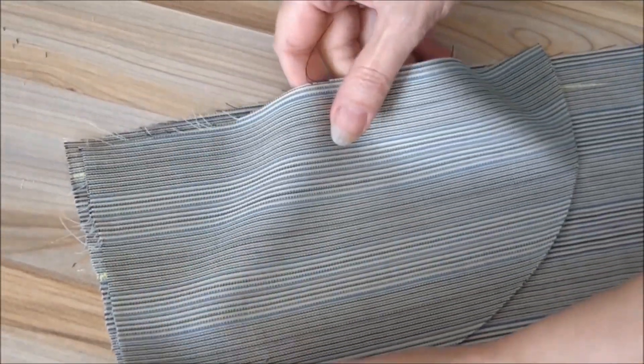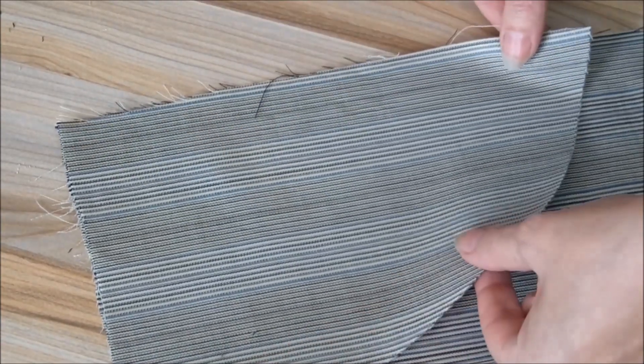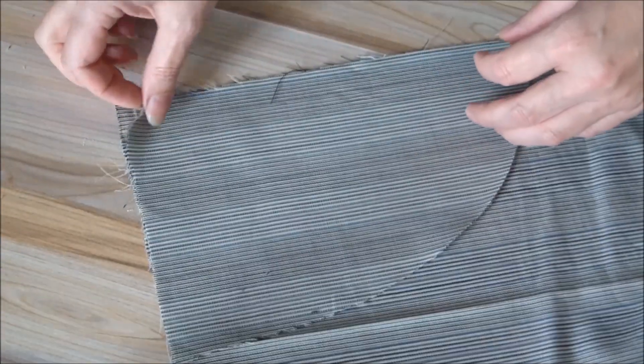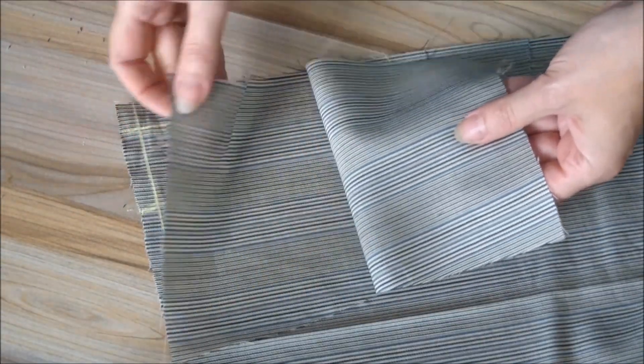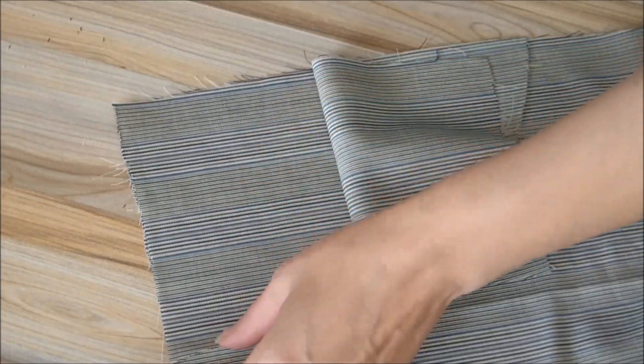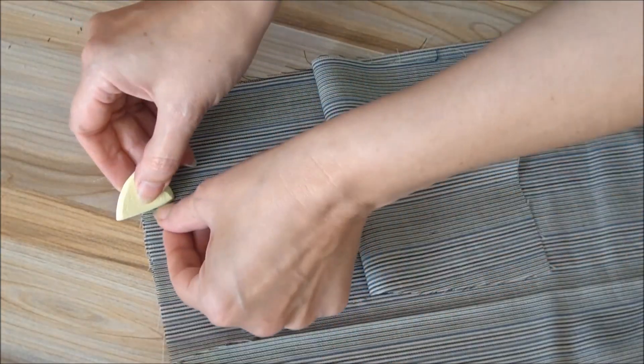To sew the slant side pocket, you will need to cut out such a rounded detail. All marking lines on the front half of the trousers must be transferred on face side of these parts.